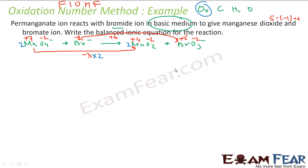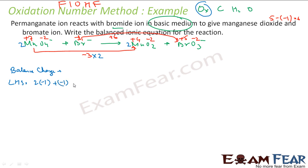The next step is to balance charge. Let's write the current reaction and check the charge. LHS charge: 1×(minus 1) plus 2×(minus 1) gives a total charge of minus 3. RHS charge: MnO₂ has zero charge and BrO₃⁻ has minus 1, but overall charge is not balanced.